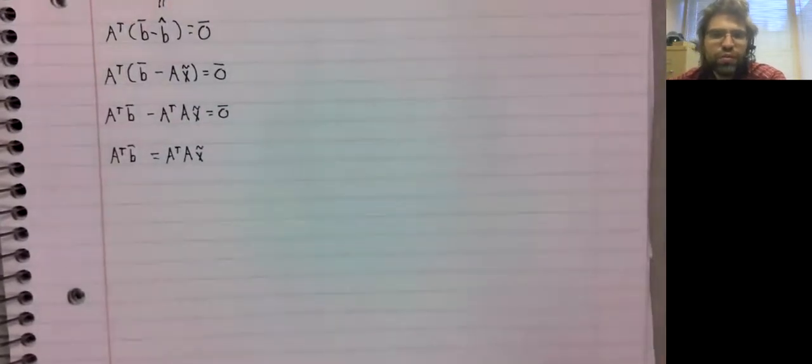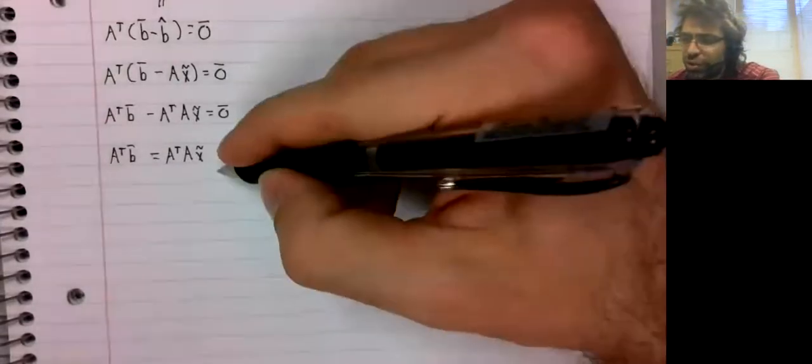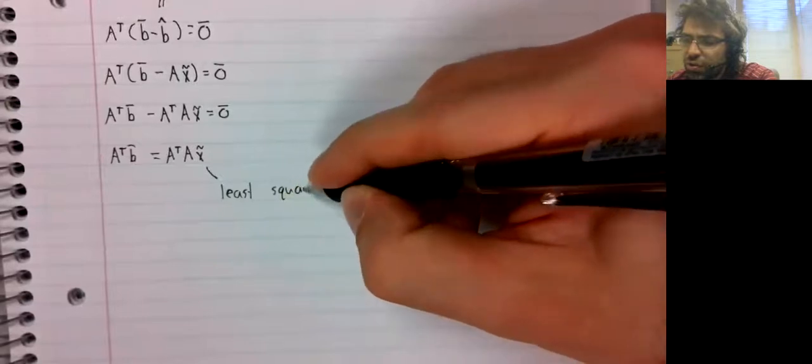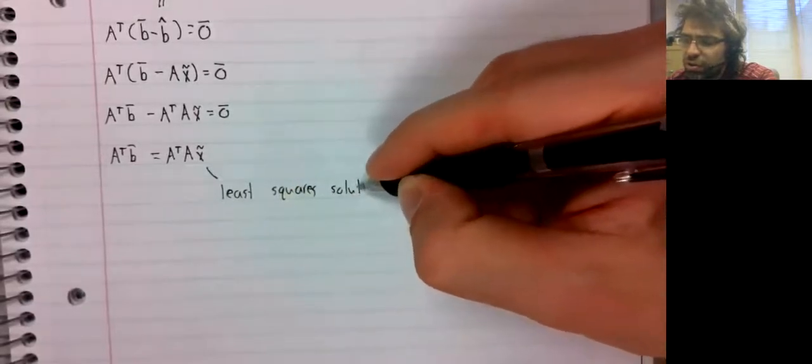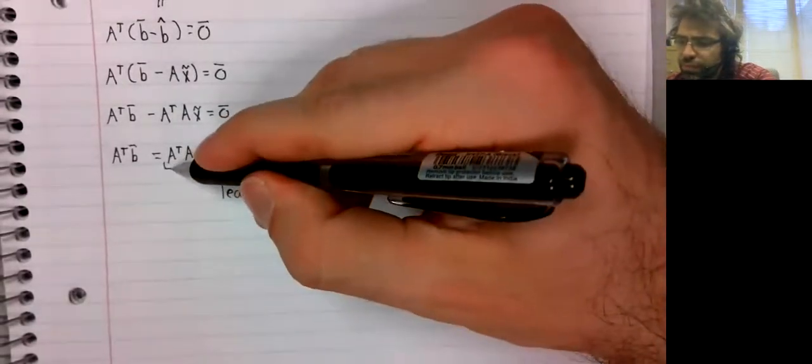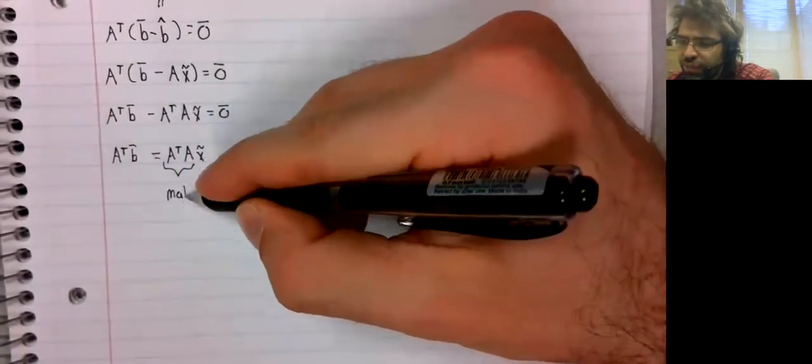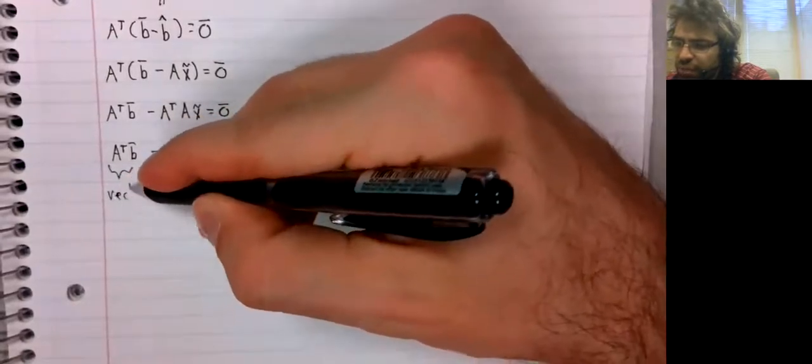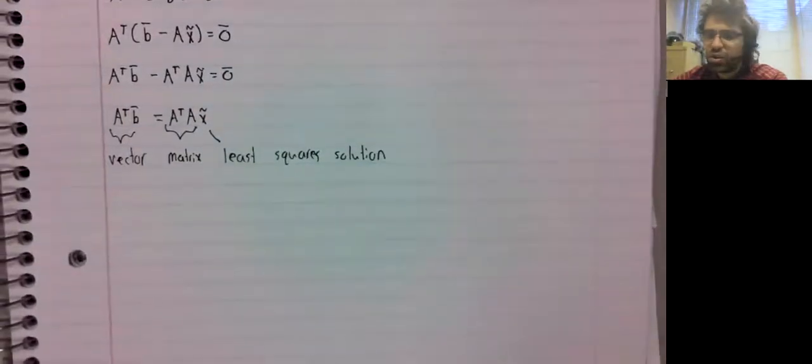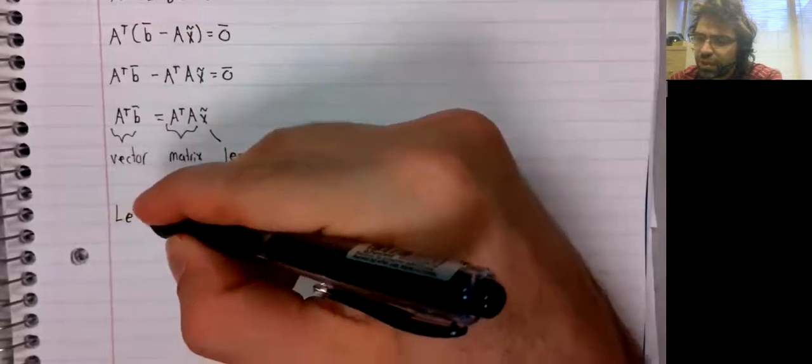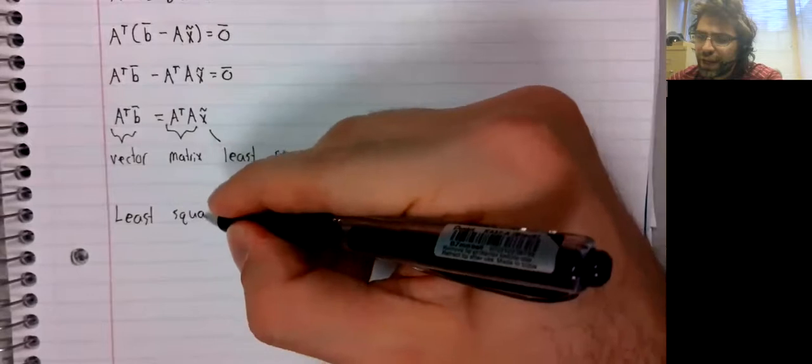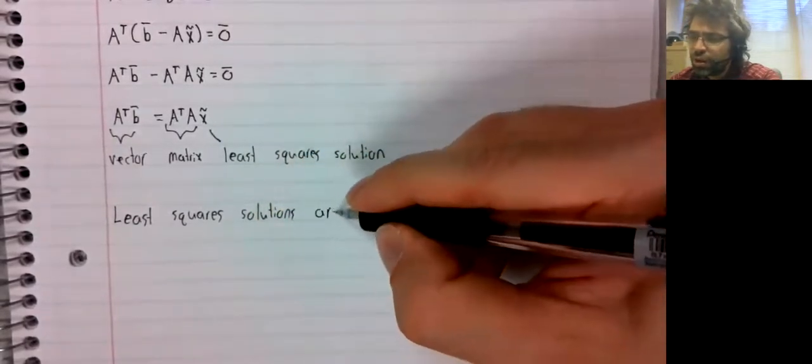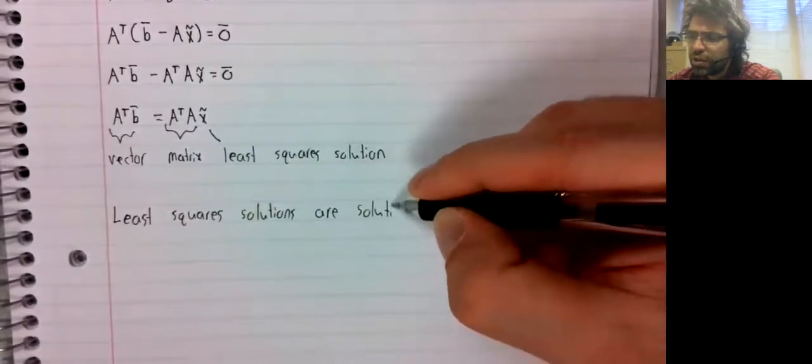And don't let all of these symbols and stuff confuse you. This is a least squares solution. A transpose A is just some matrix. A transpose b is just some vector.